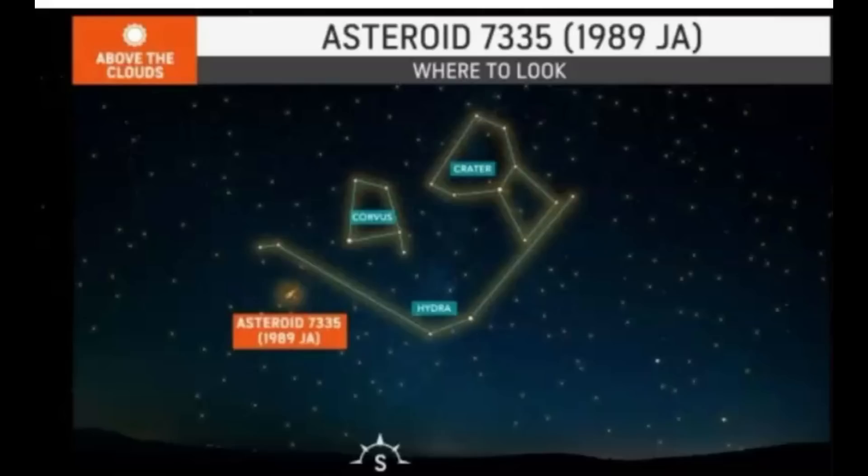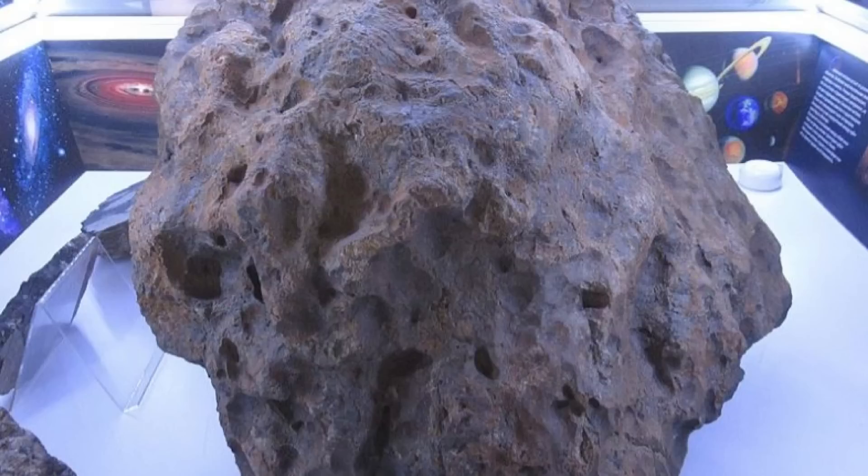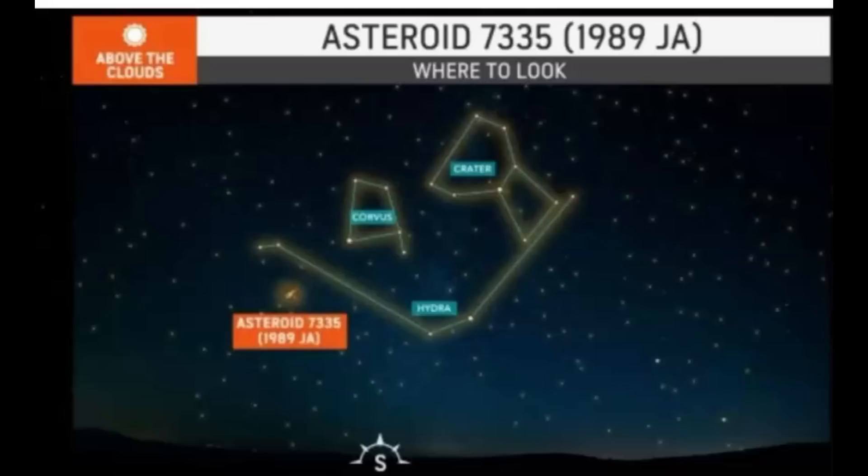For example, the Chelyabinsk meteor exploded as it passed through our atmosphere with a force of 20 to 30 times greater than the Hiroshima atomic bomb, and it was only 65 feet across. This one that's flying by us on Friday is 1,800 feet across.